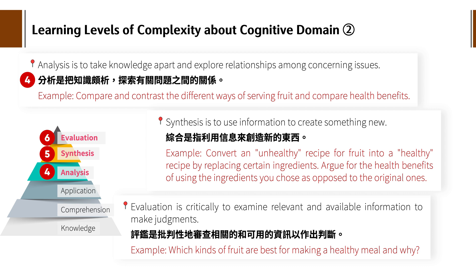第四点就是分析（Analysis），是把知识剖析——take knowledge apart——甚至探索有关问题之间的关系。例如：compare and contrast the different ways of serving fruit and compare health benefits，就是吃各种不同的水果对我们身体健康到底有什么影响可以比较，就像那个网红弄出十个食物来做比较。